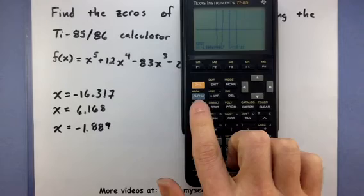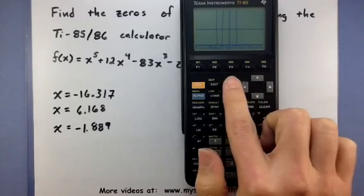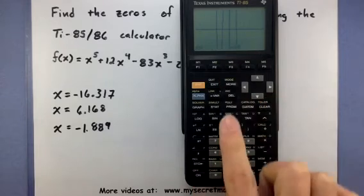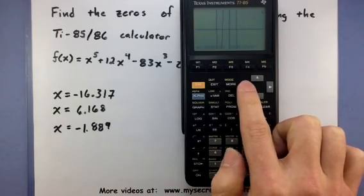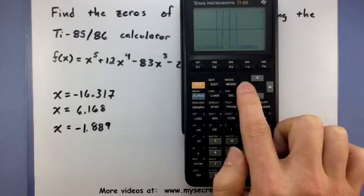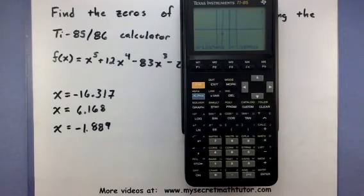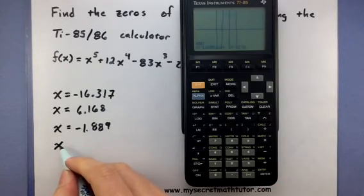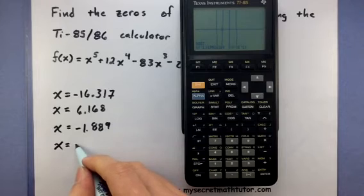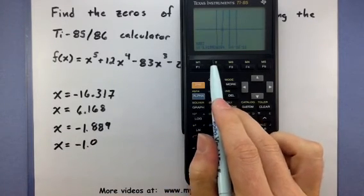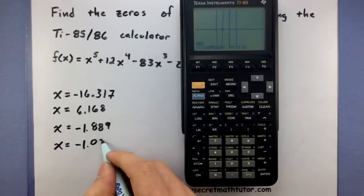Alright. Let's do that another time. So graph, more, math, root, and this one I'm going to move really close to negative 1. Look at that. You can even see the blinking cursor this time. It's actually showing up on the screen. So I'll press enter. And this one says it's around negative 1.02.